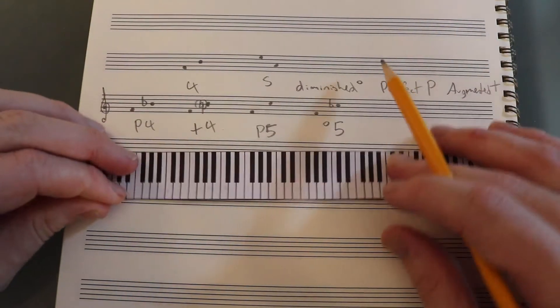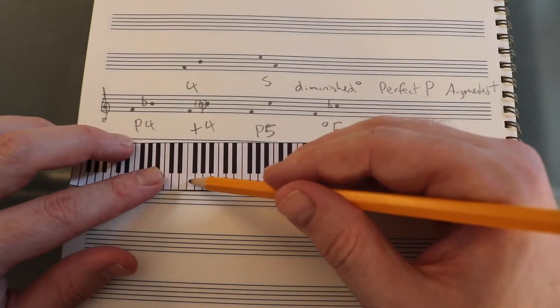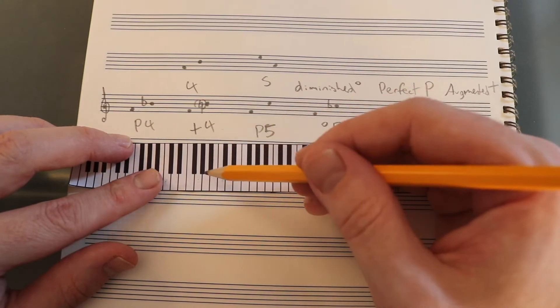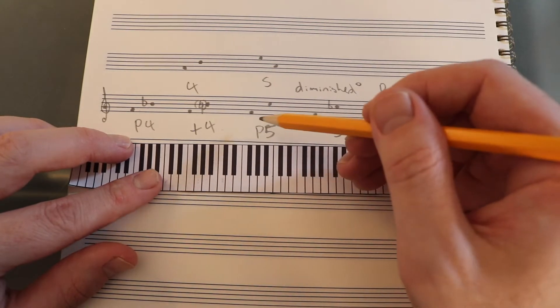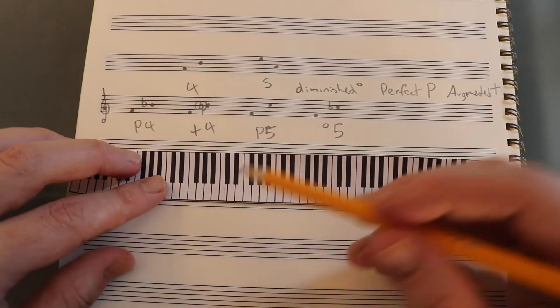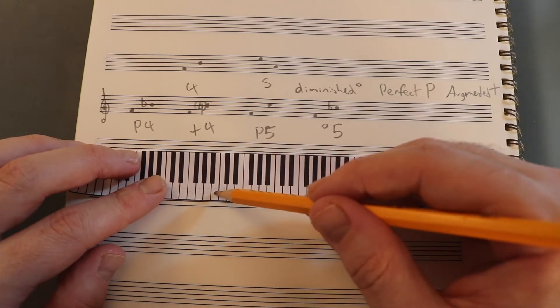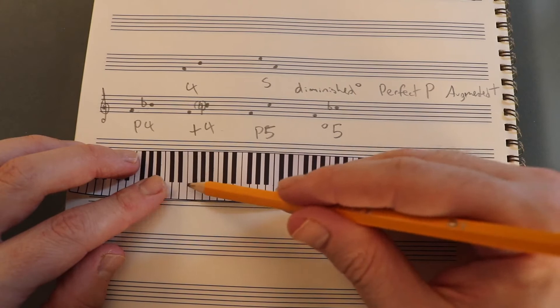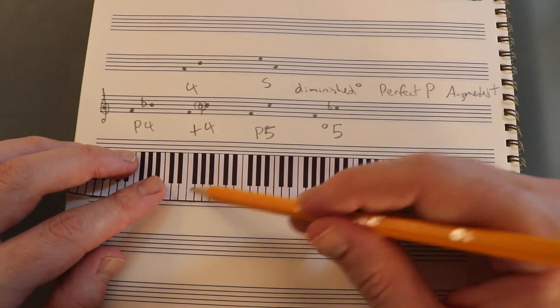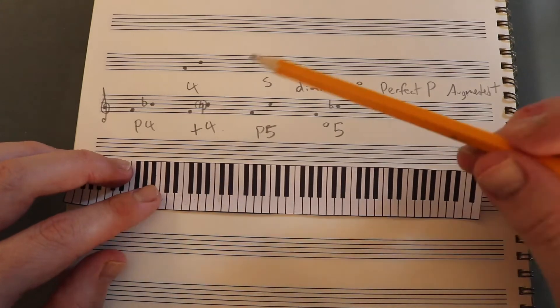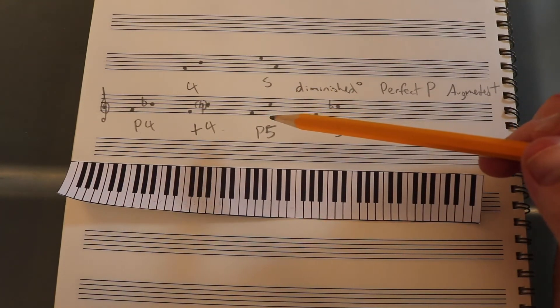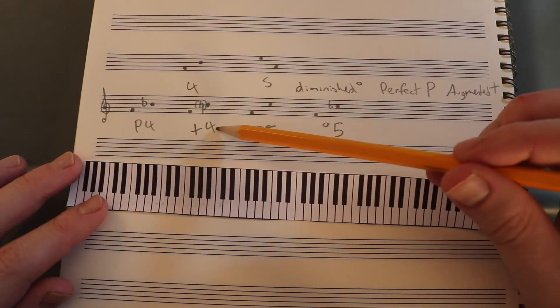Why is this confusing? Because, let's take a look at our keyboard. From F to B-flat was my perfect fourth. From F to B was my augmented fourth. From F to C was my perfect fifth. From F to C-flat is a diminished fifth. F to C-flat sounds exactly the same as F to B. They're spelled differently. So one of these is a fourth, the F to B, and one of these is a fifth, the F to C-flat.